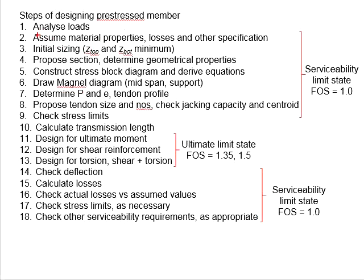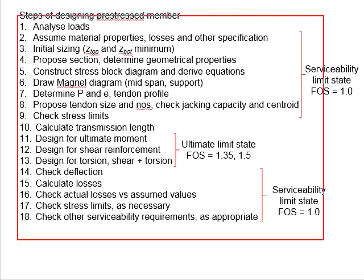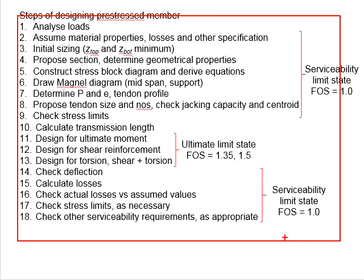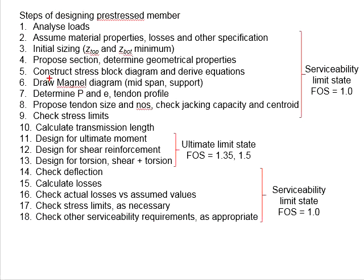In the previous videos we mentioned the steps of designing pre-stressed members. We discussed constructing the magnet diagram, and based on the visible area in the magnet diagram we determine suitable P and e, as well as the extended profile for the sections, so that the sections have stresses within the limits of compression and tension of the concrete.